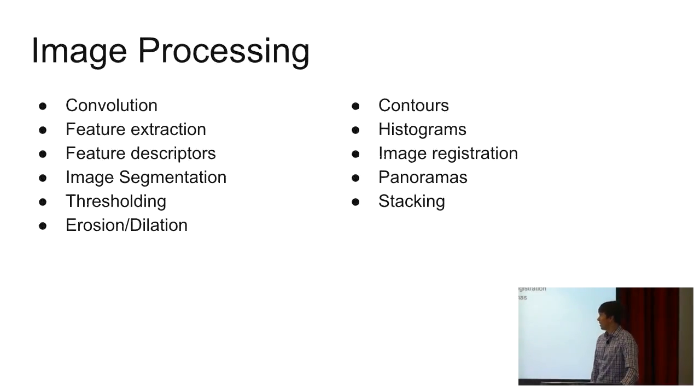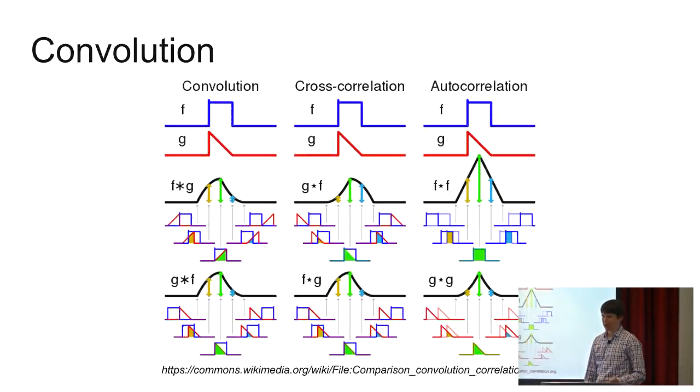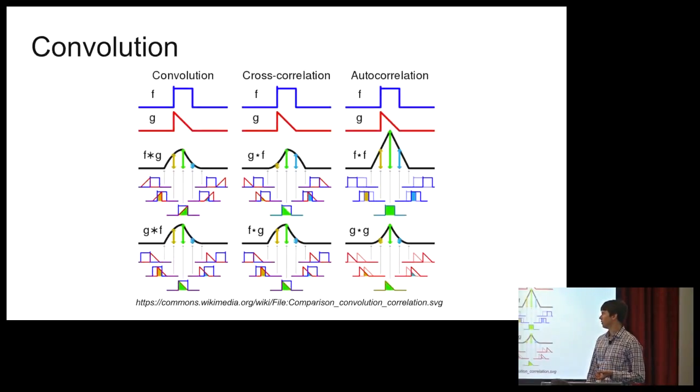That gets us to the image processing portion of our talk. We're going to run down this set of features. We're not going to go too heavy on the math, but your takeaway you want is to have an idea of what it is and how it works on a broad level. So first up is convolution. This is a low-level building block for a lot of image processing applications. Basically, what you want to remember is this is a lot of times how a filter is applied to an image.